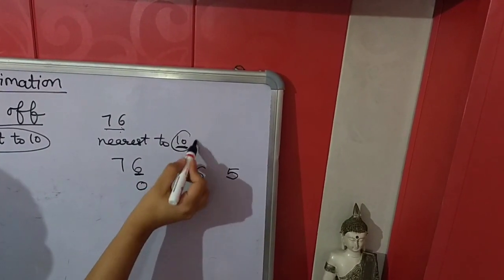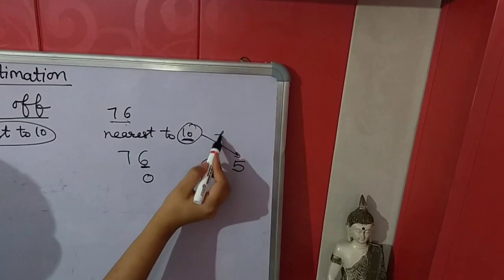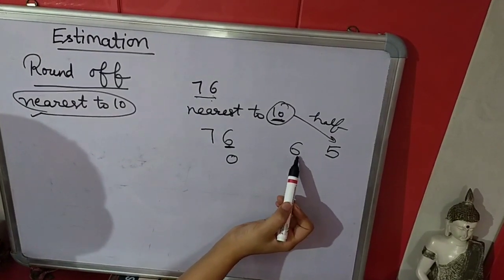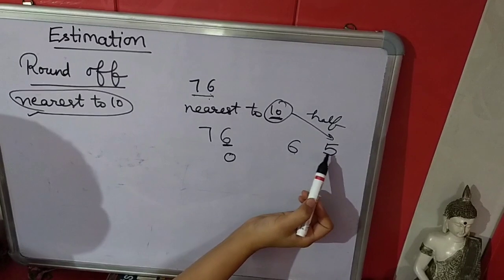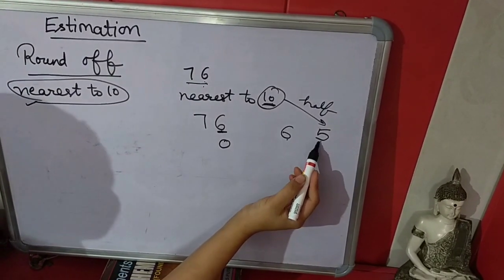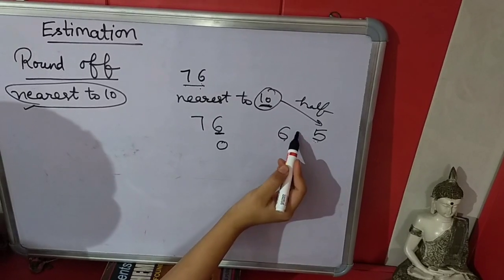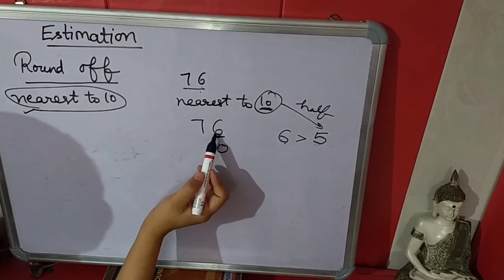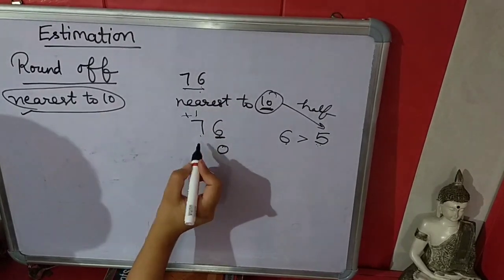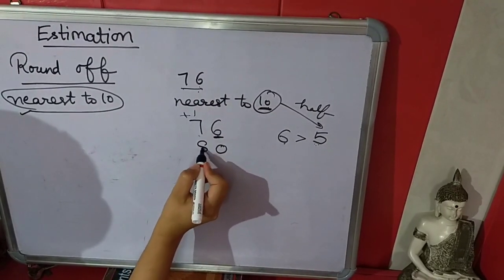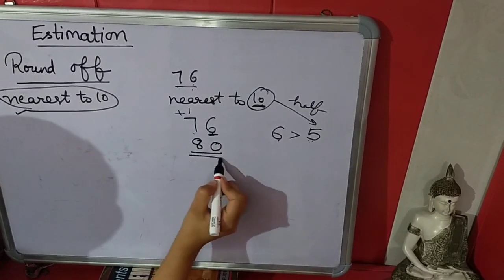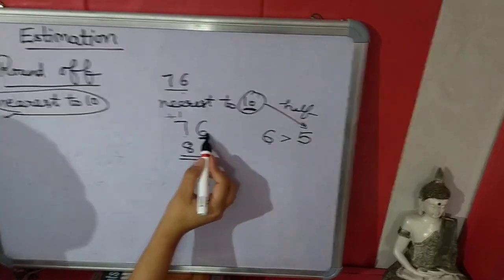And we will compare this number to 5, which is half of 10. We will compare this 6 to 5. If this number is equal to 5 or more than 5, then we will add 1 in the next number: 1 plus 7 equals 8. So 80 is the round off number of 76.